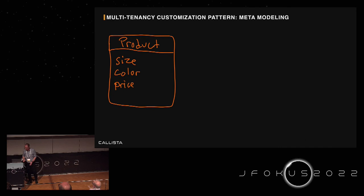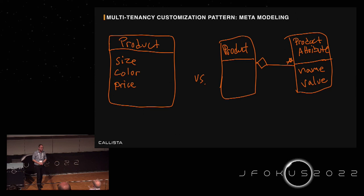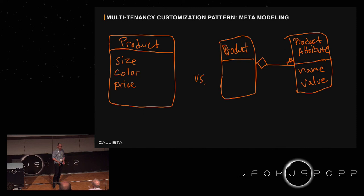A slightly more advanced customization concept is to meta-model the important business entities so that customers can dynamically add their own attributes or properties to core concepts — like you can add properties to a Jira issue or even additional states.